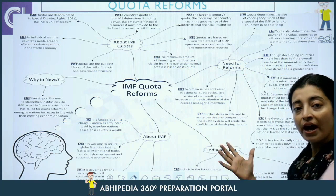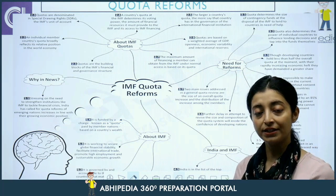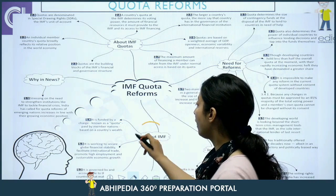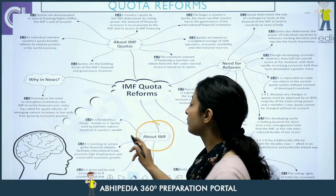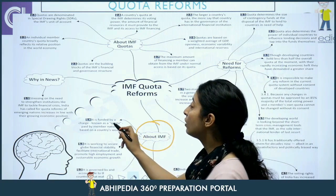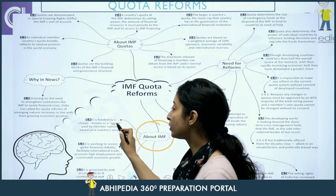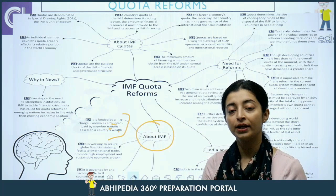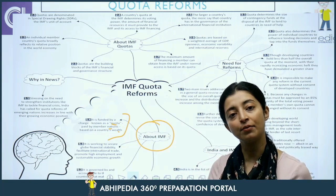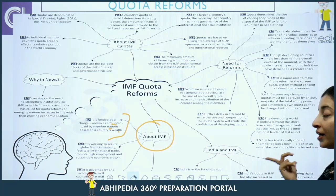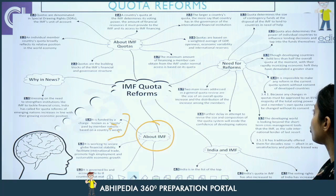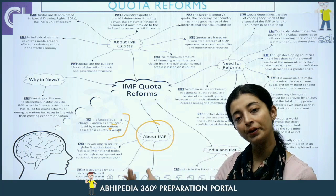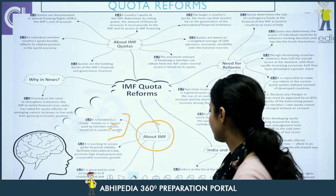Ye kya hai — this is a mind map about IMF, its reforms, and what it needs. Most of the things I have already told you. IMF ki funding kaise hoti hai — quota ki through, har ek nation quota deta hai. India ke quota aur voting rights ki baatein hum kar chuke hain. Is mind map ko padh ke aapko sab kuch pata lag jayega — yeh sab baatein hum ne cover kar li hain.